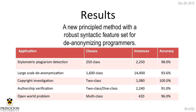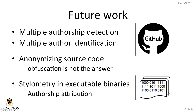Our results show we bring a new principled method with a robust syntactic feature set for de-anonymizing programmers, demonstrating a serious concern for anonymity as an open source software developer or programmer. For future work we're planning to look at multiple-authorship detection — can we find multiple authors in git repositories and identify which part was written by whom? We'd also like to look into anonymizing source code, since obfuscation isn't the answer. And what about stylometry in executable binaries? When you compile code, do coding style features still persist to the compiled version?